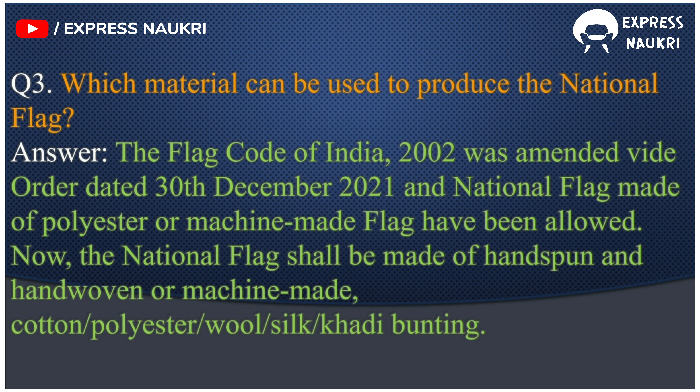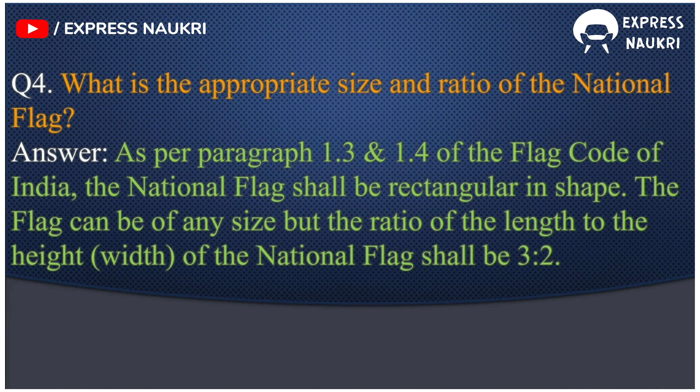Question 3: Which material can be used to produce the national flag? Answer: The Flag Code of India 2002 was amended vide order dated the 30th of December 2021, and national flags made of polyester or machine-made flag have been allowed. Now the national flag shall be made of handspun and hand-woven or machine-made cotton, polyester, wool, silk, or khadi bunting.